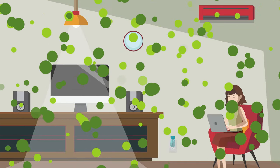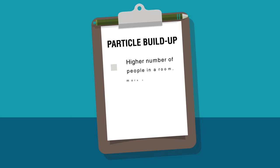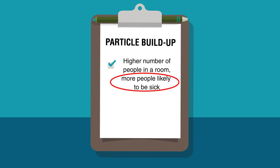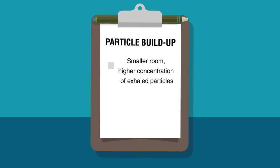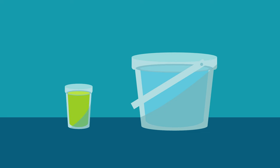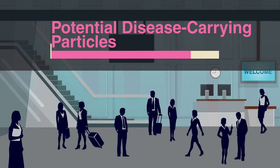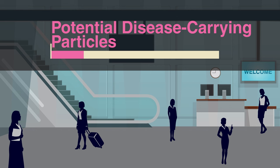The more disease-carrying particles build up in a room, the greater the chances that someone healthy will inhale them and possibly get sick. Many factors affect this buildup, such as the number of people in a room — the more people, the more likely some are sick, meaning more disease-carrying particles in the air. The size of the room also matters. In a smaller room, concentrations of exhaled particles can build up to higher levels than in a larger space — imagine a drop of food coloring in a cup of water versus a bucket. However, if you just pack more people into a larger space, the benefits decrease. Keeping the density of people low means the amount of potential disease-carrying particles per volume of air also remains low.